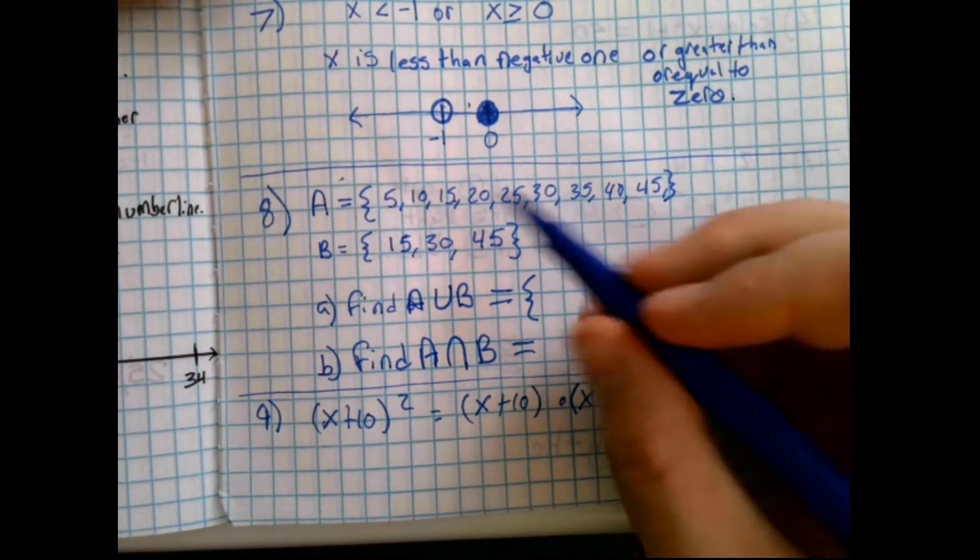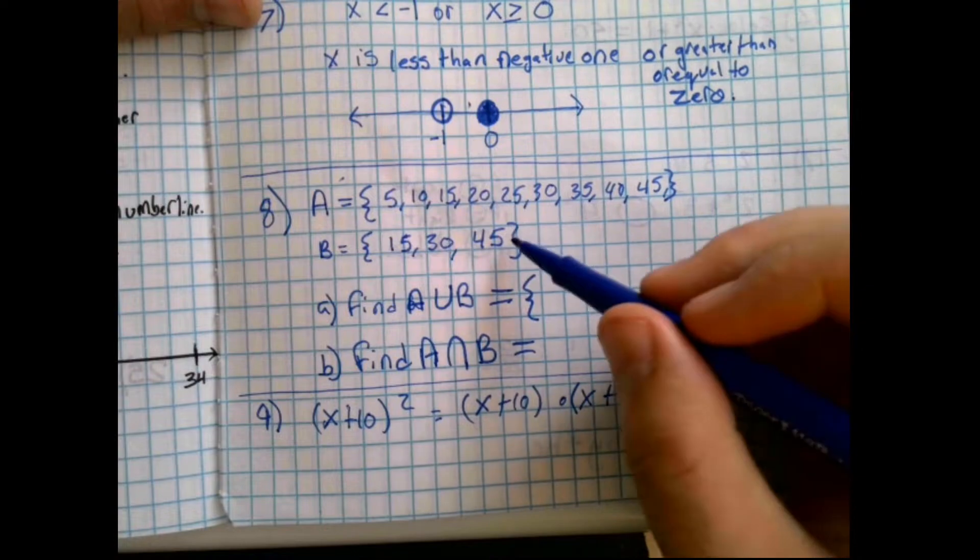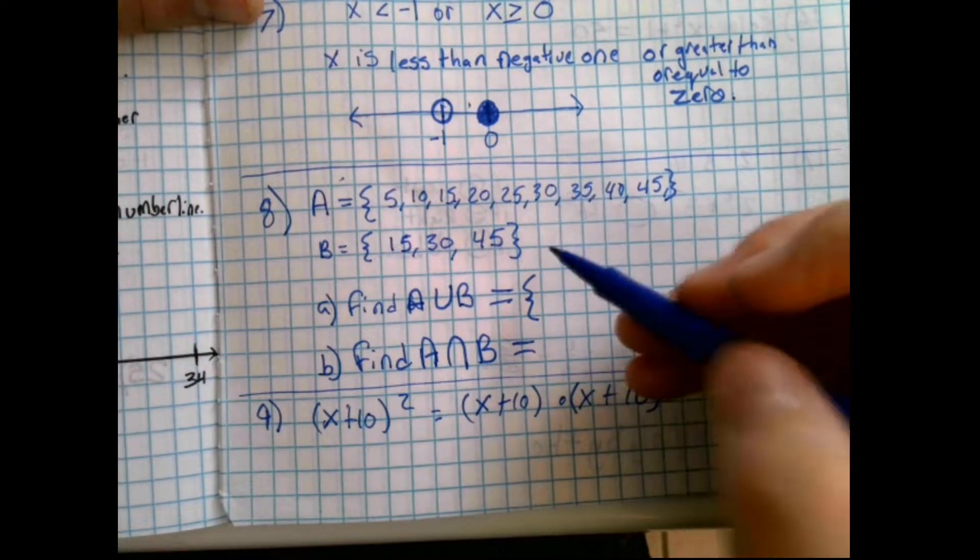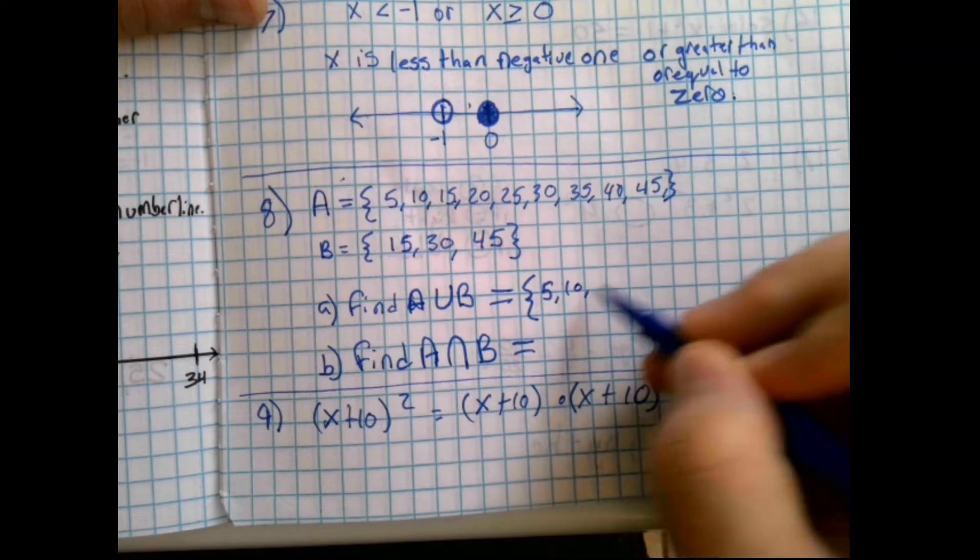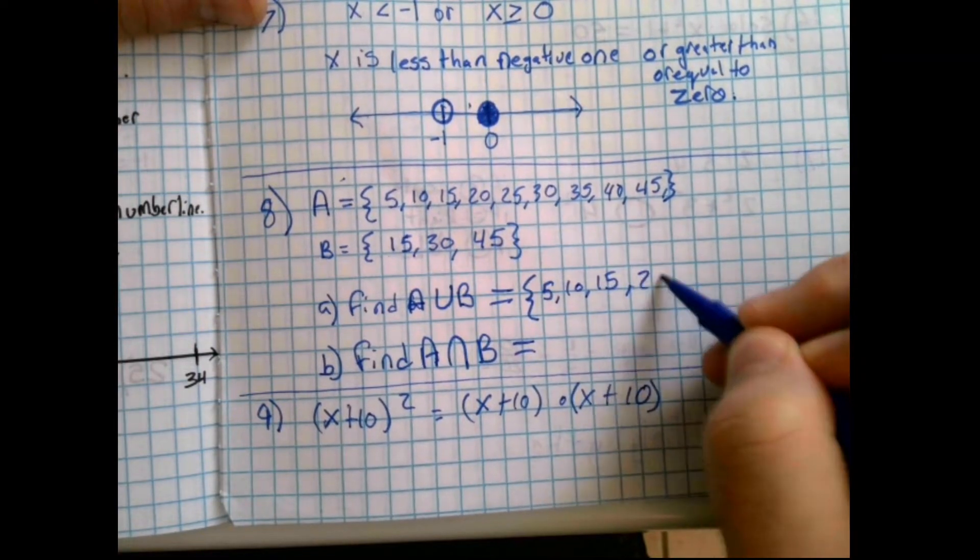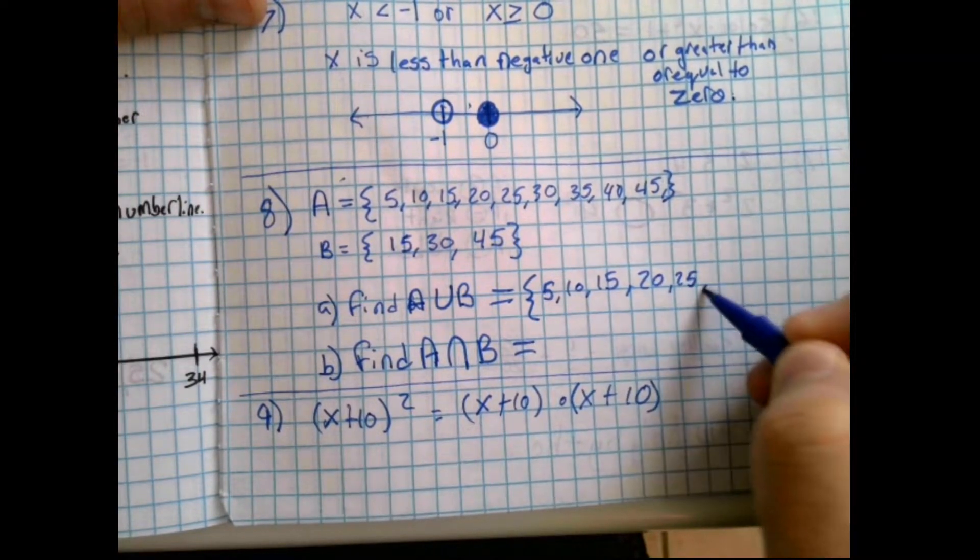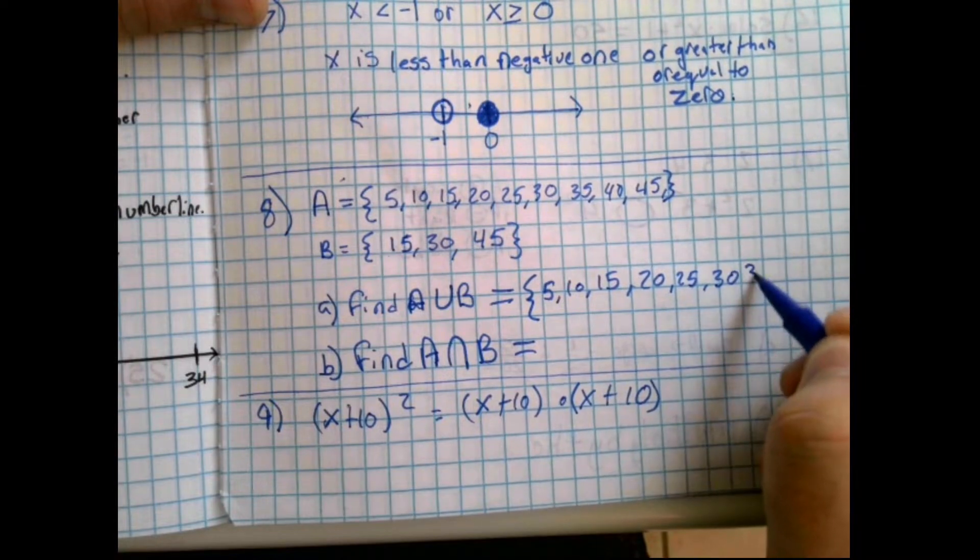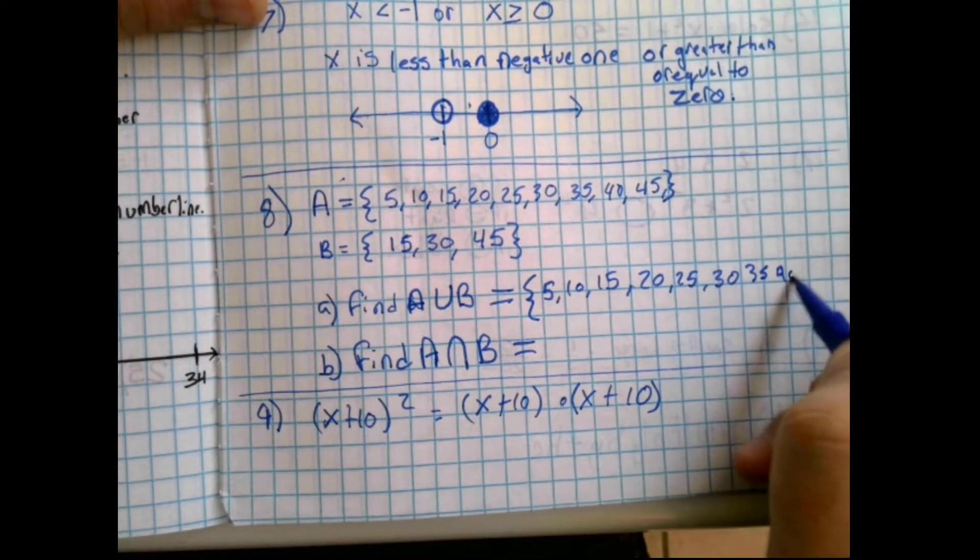When that happens, the union of a set and its subset is just the larger set. So it's going to be 5, 10, 15, 20, 25, 30, 35, 40, and 45.